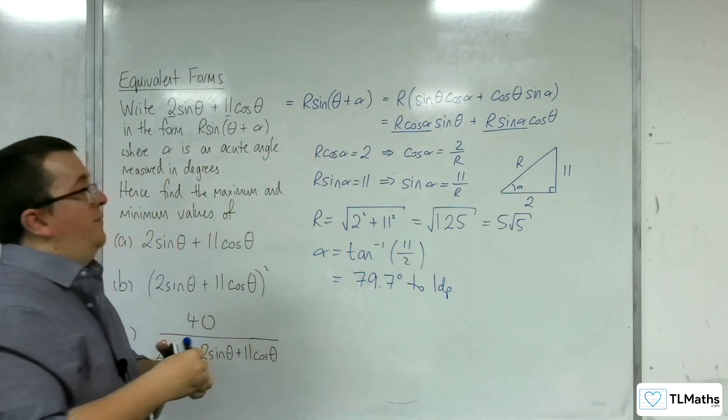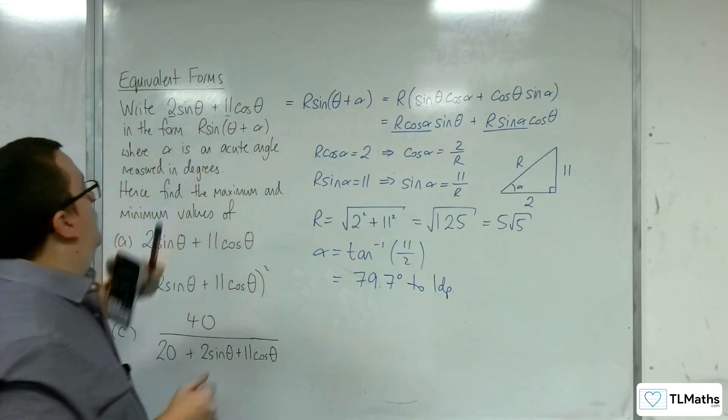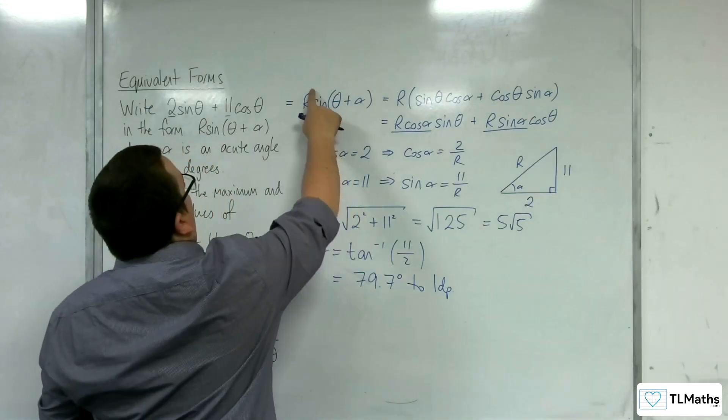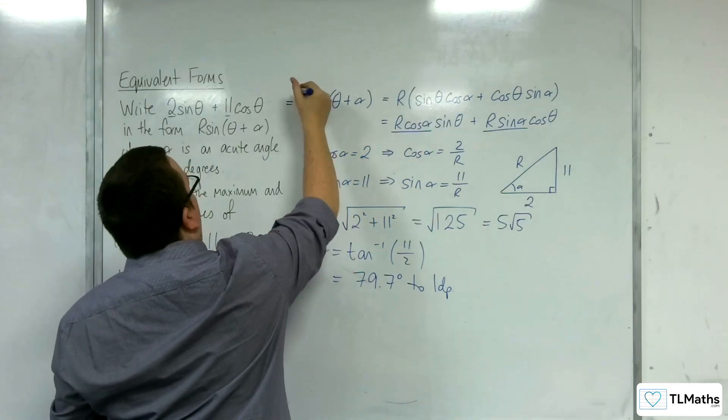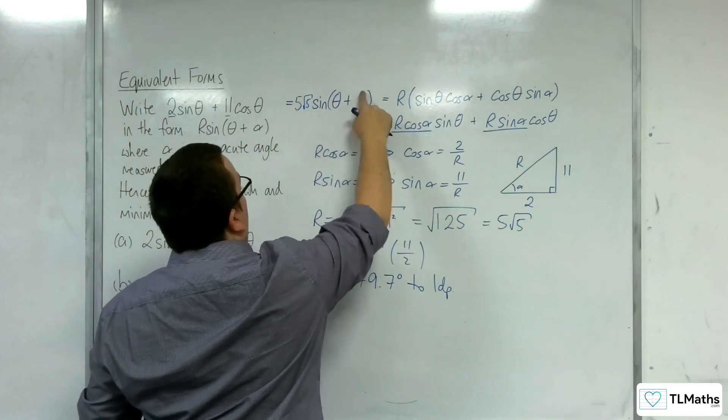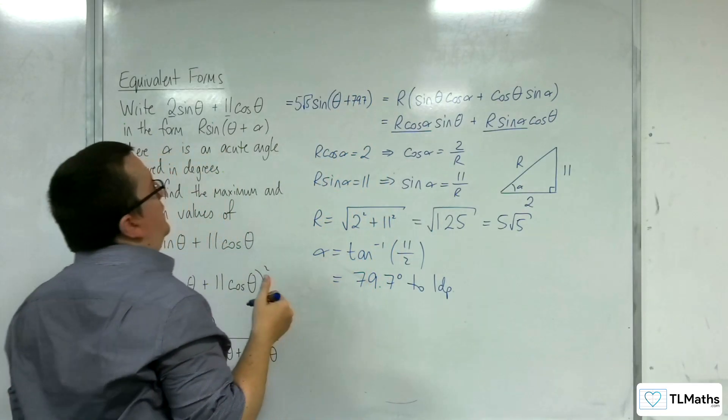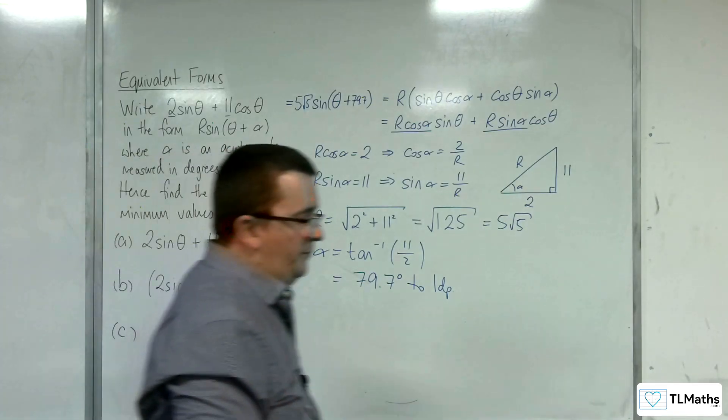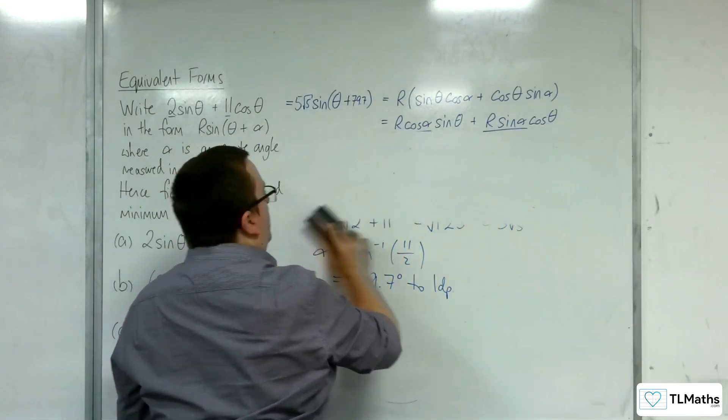Inverse tan of 11 over 2 is 79.7 degrees to 1 decimal place. And so we have done what was required of us. Writing this in this format would be equal to 5 root 5 sine of theta plus 79.7 degrees to 1 decimal place. So that's the equivalent forms part.